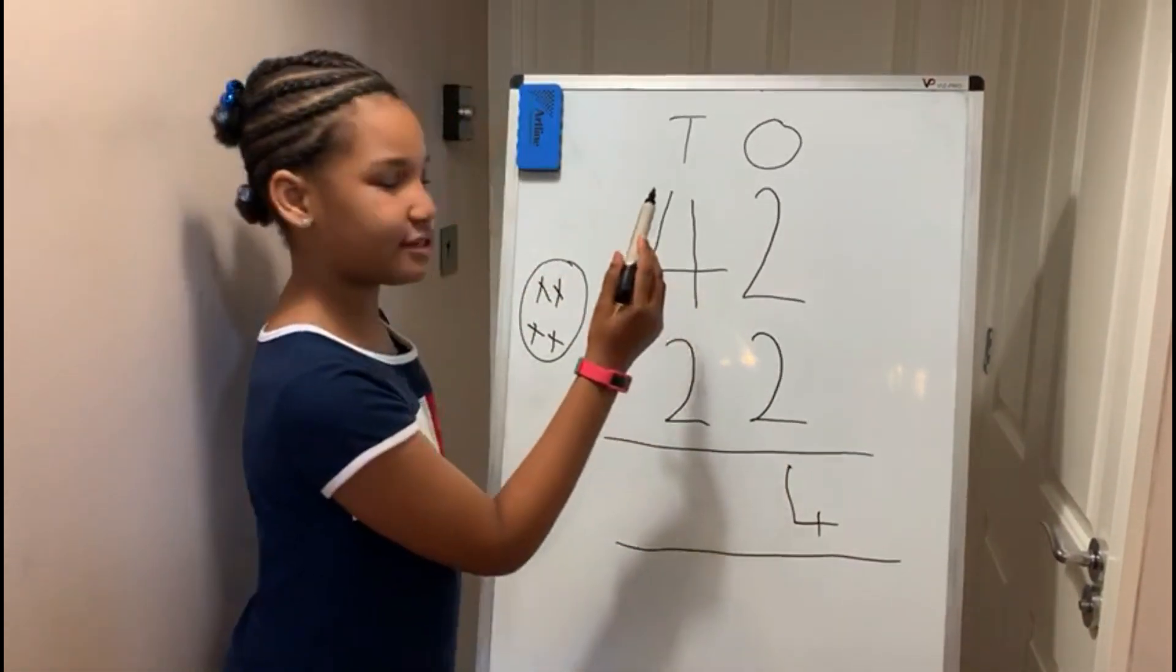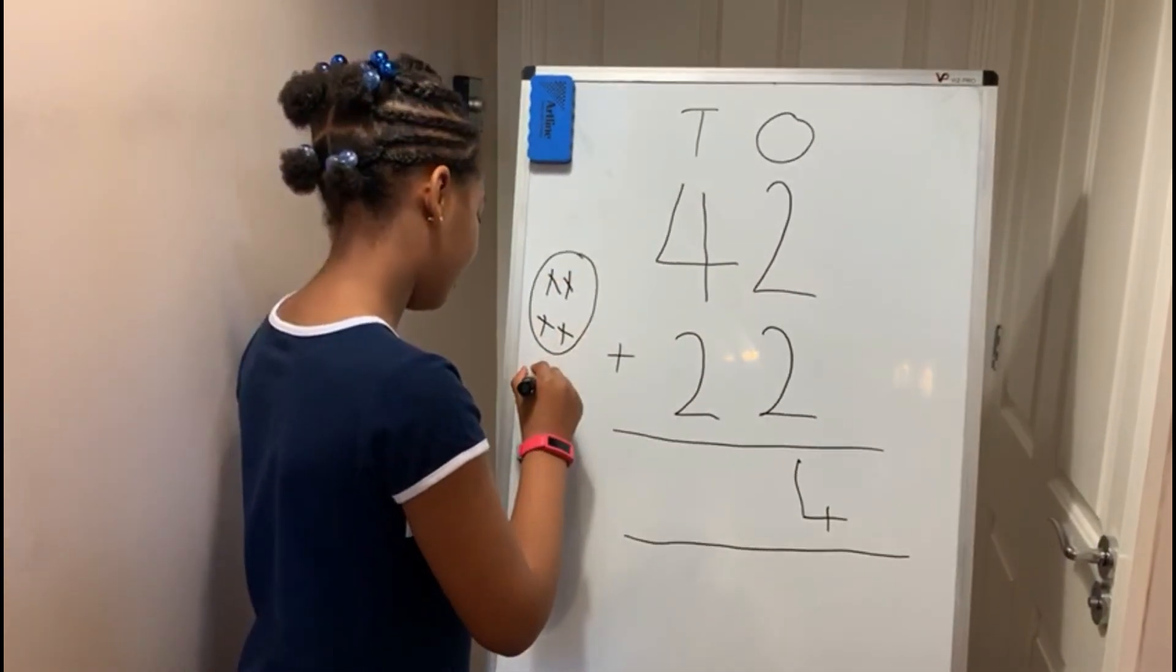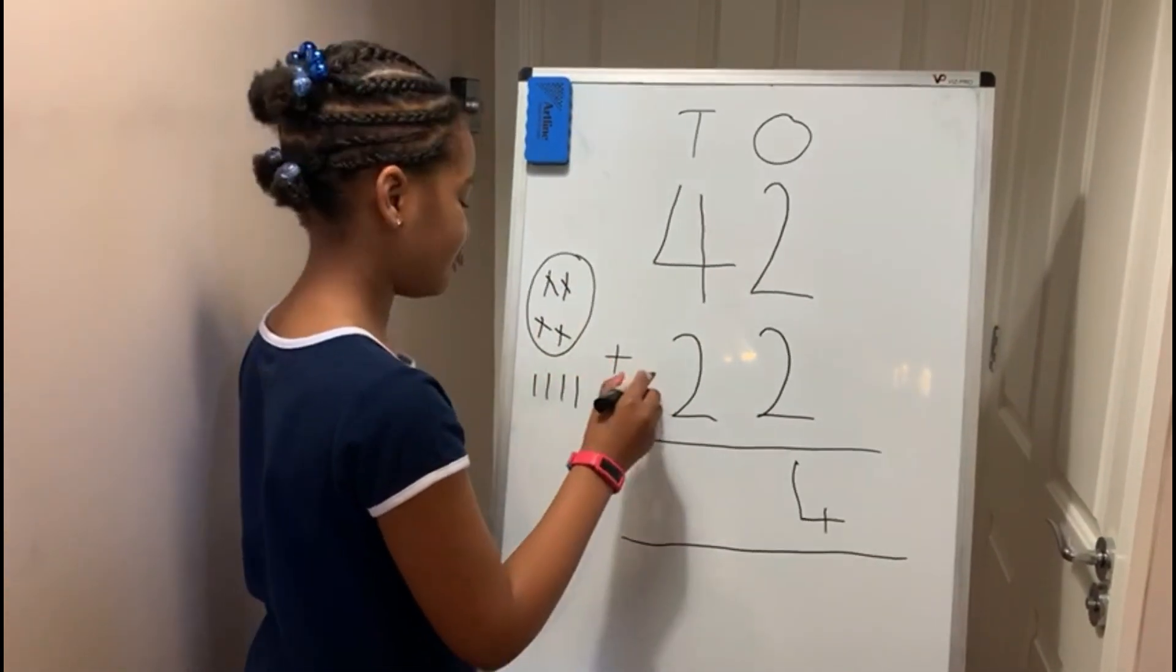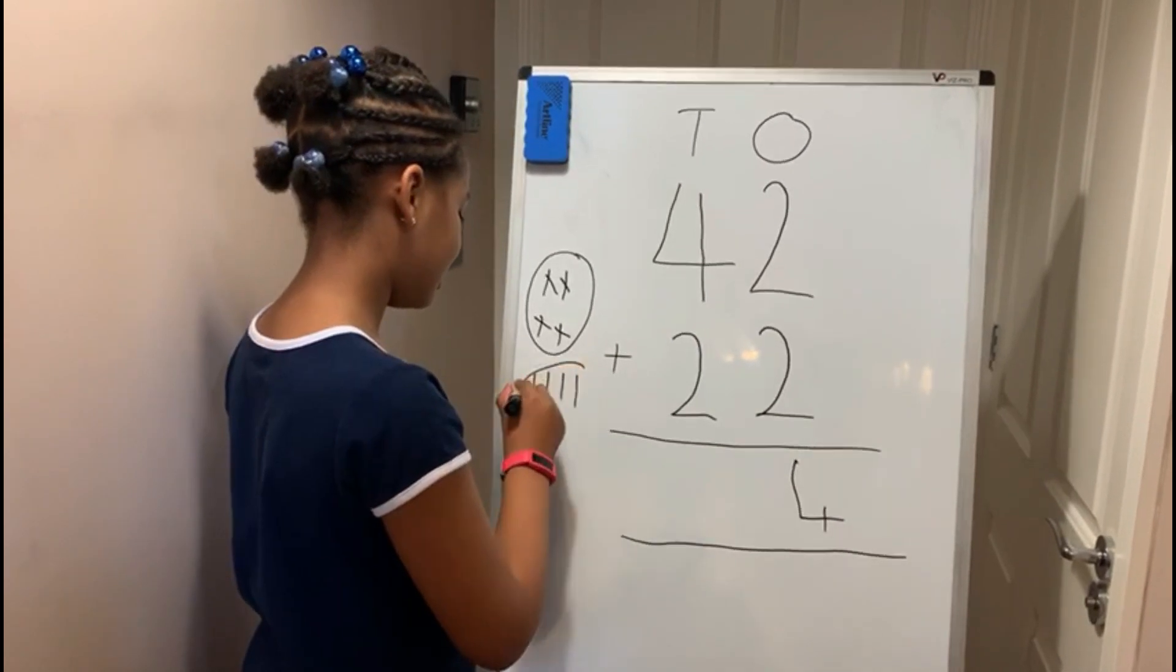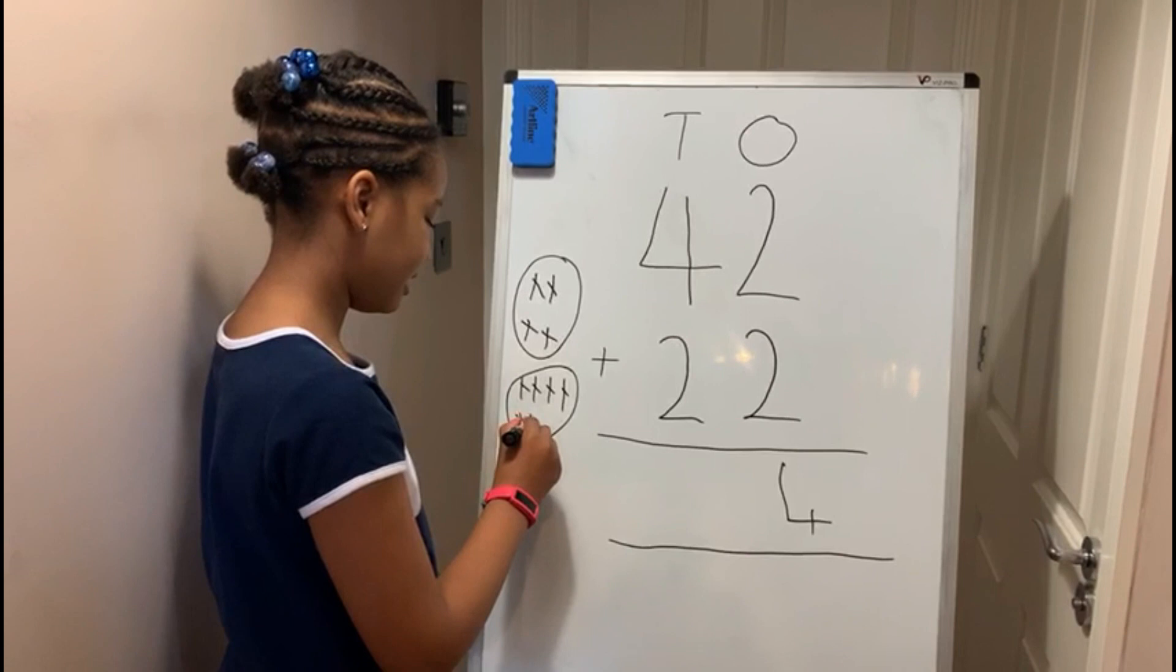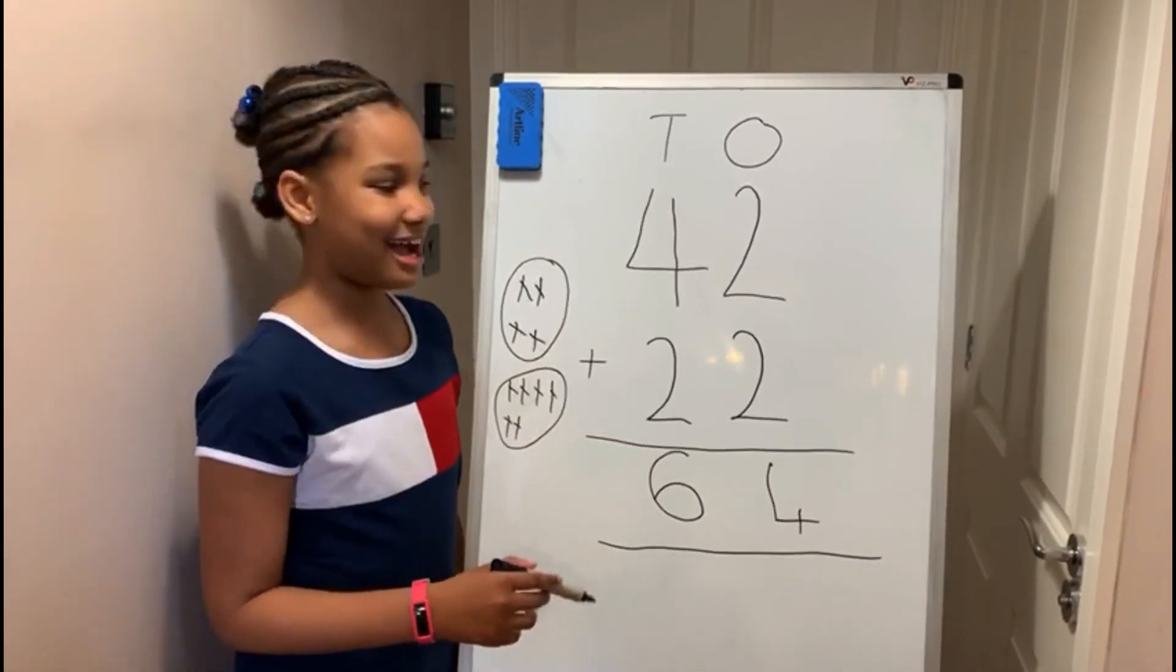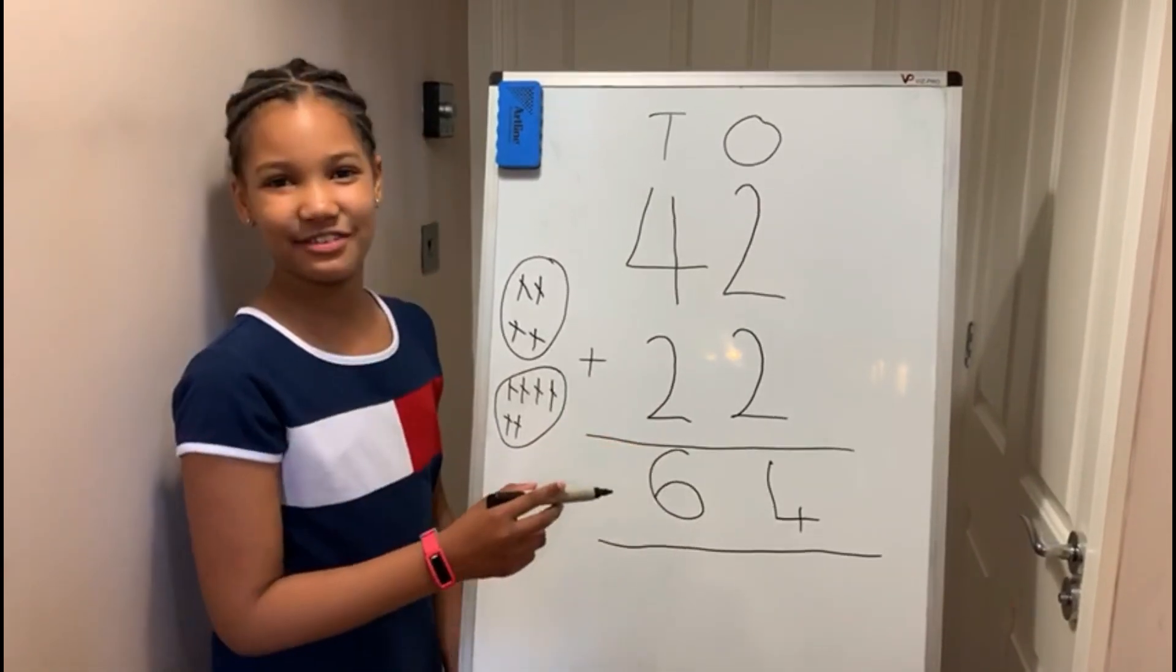And now I'm moving on to tens. You write the four here: one, two, three, four, and the two here: two. Add it all together: one, two, three, four, five, six. So you write your six here. So there's your answer, 42 add 22 is 64.